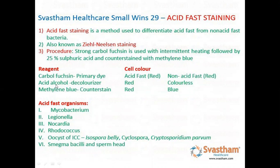First, we will take the primary dye which is carbol fuchsin and apply it to the bacteria. Both acid fast bacteria and non-acid fast bacteria will turn red color after this step.